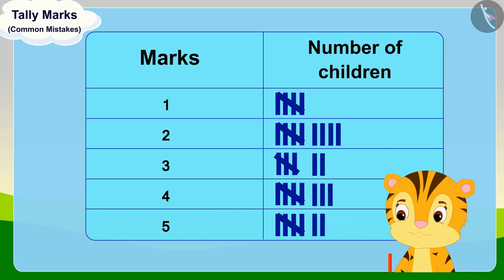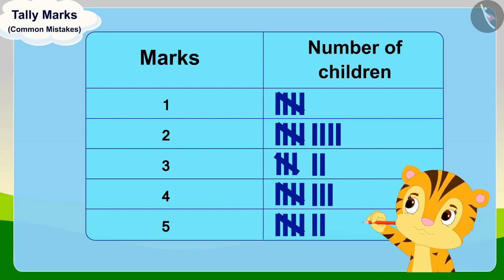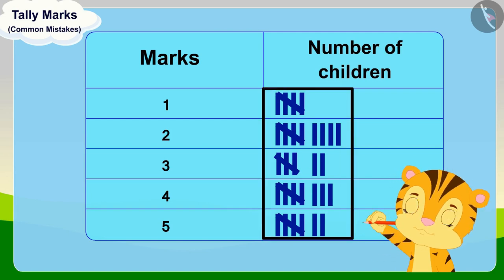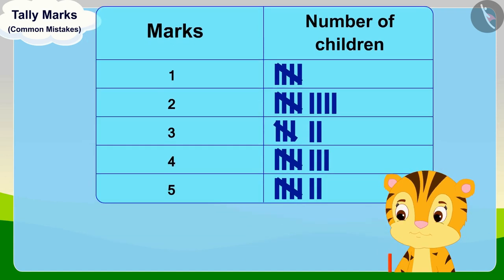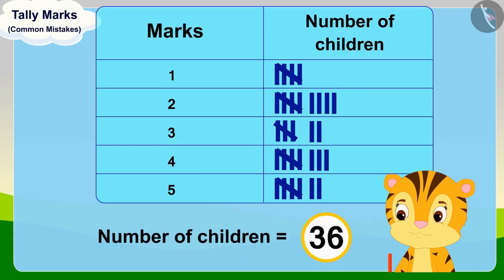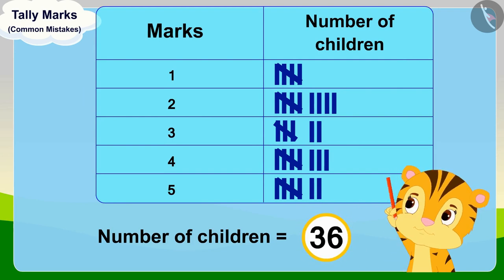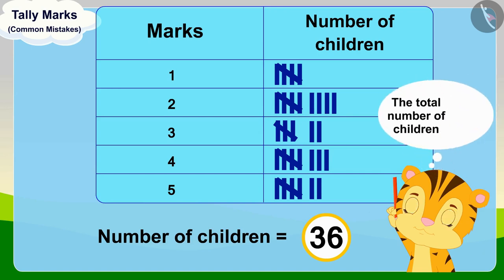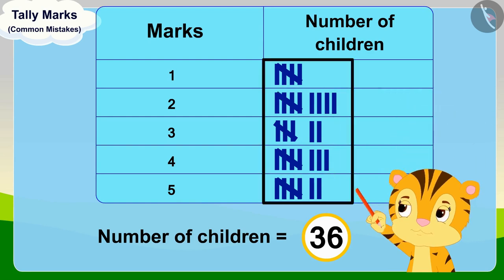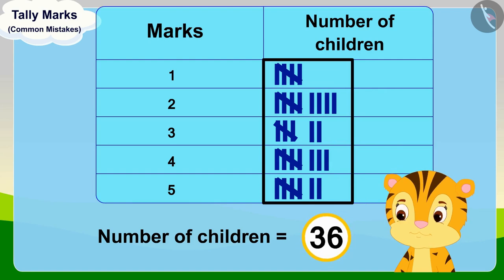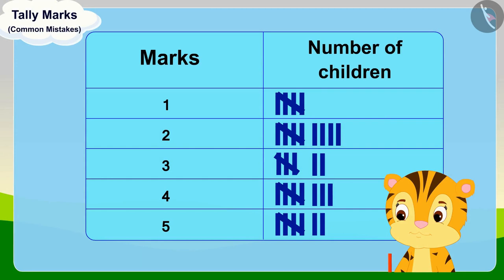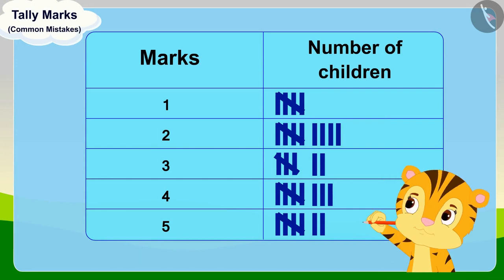But when she looked at the total number of children in the table, she found that the marks of 36 children are recorded. Mrs. Khan started wondering, because the total number of children is 35, and according to the tally marks, marks of 36 children are recorded.